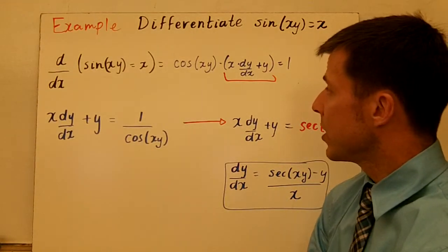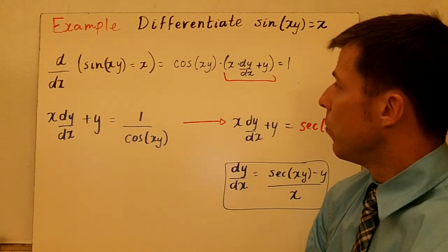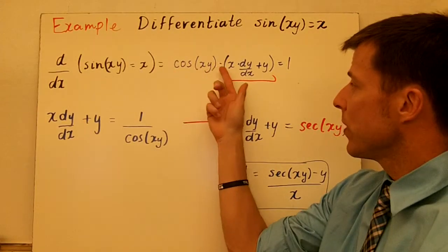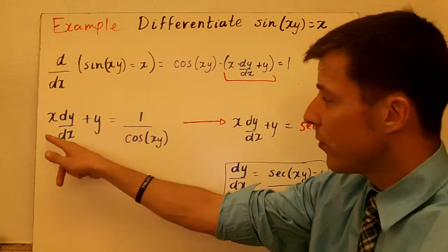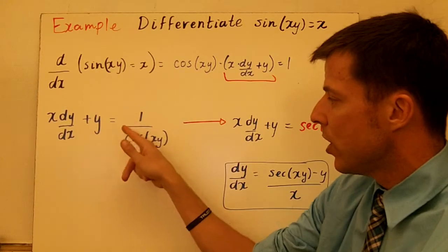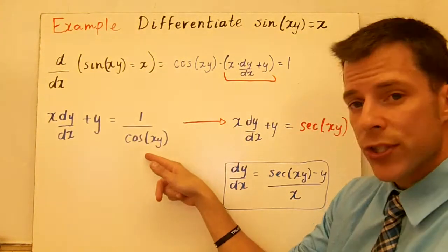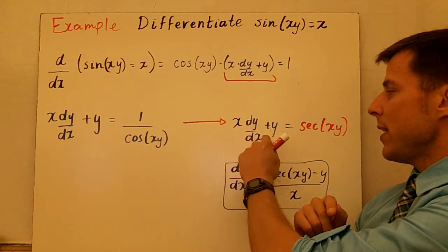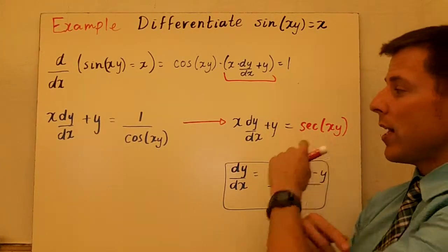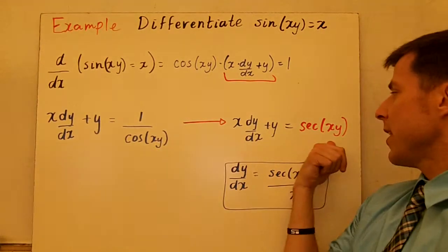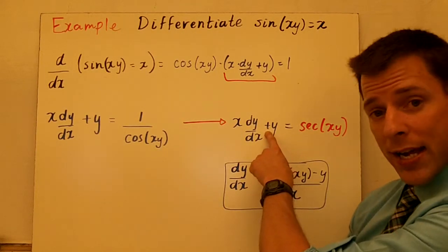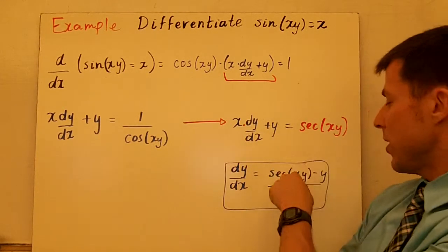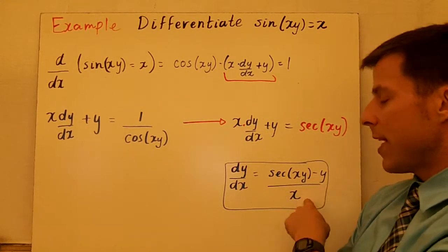We've got to get dy/dx by itself, so what we're going to do is divide both sides by cosine of xy to get rid of it. That leaves x dy/dx plus y equals 1 over cosine xy. But 1 over cosine of x — isn't that just secant? So I replace 1 over cosine xy with secant xy. Now all I have to do is subtract y and then divide by x because this is multiplication. So secant of xy minus y, divided by x, is the derivative. That's the derivative of this function.